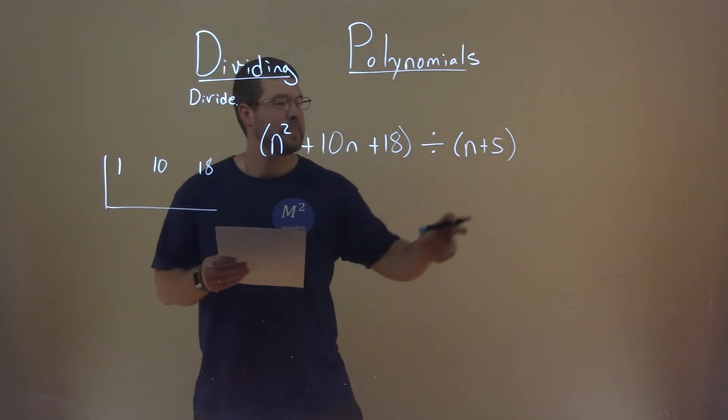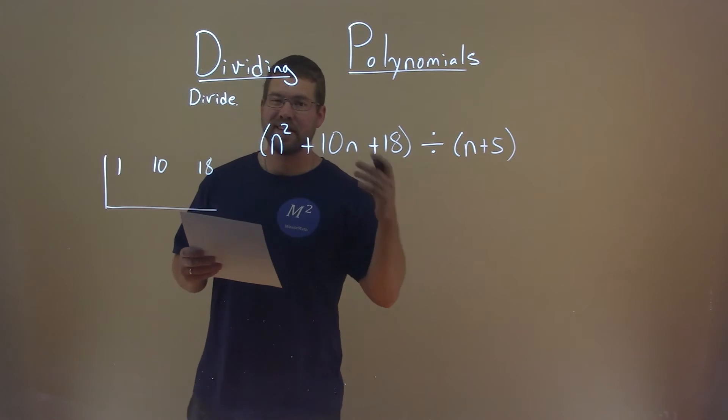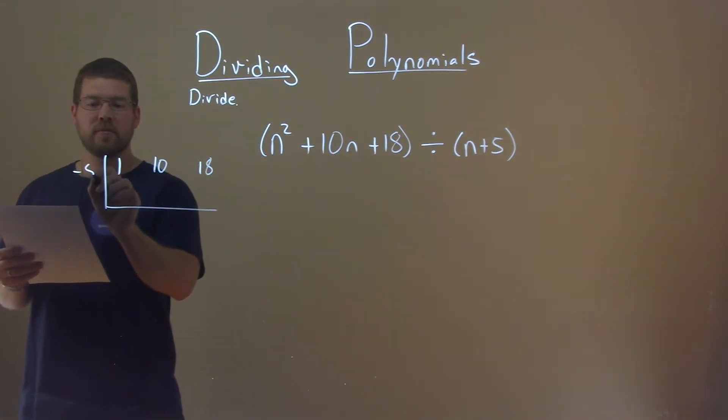Now we look at the other part, n plus 5. We'll have a positive 5, so we'll be opposite of that, negative 5. So we'll put a negative 5 right here.